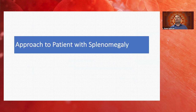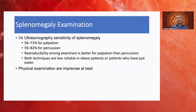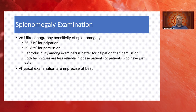How do we approach a patient with splenomegaly, and what constitutes splenomegaly? Comparing palpation and percussion with ultrasound, palpation has a sensitivity of 56–71% and percussion 59–82%. Both techniques miss many cases and have poor reproducibility, especially in obese patients or those who have just eaten. Physical examination is at best imprecise for splenomegaly. Additionally, the spleen needs to be more than double its normal size before becoming palpable, since it first enlarges posteriorly and only comes out anteriorly below the rib cage once that space is full.